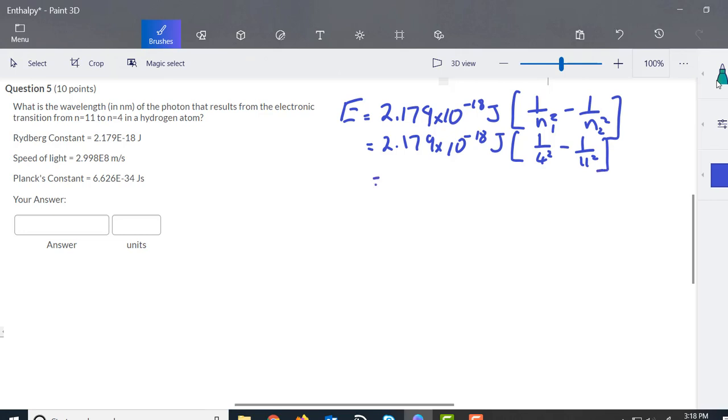We do the math and it comes out to be 1.182 times 10 to the negative 19 joules. It's going to have the same unit as what we have here on this constant.